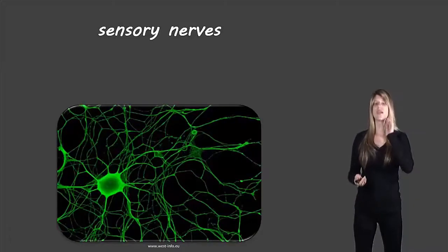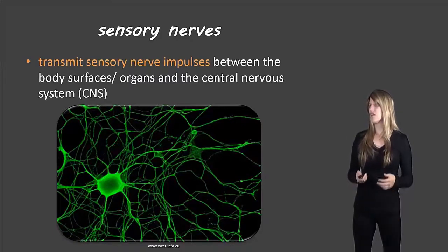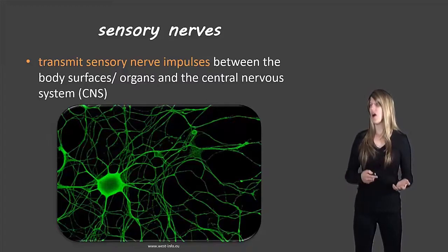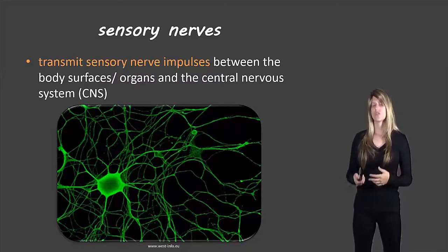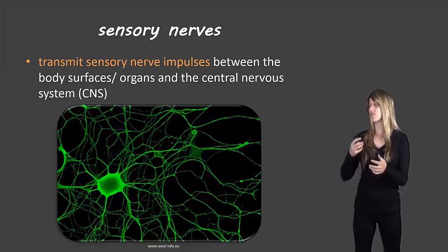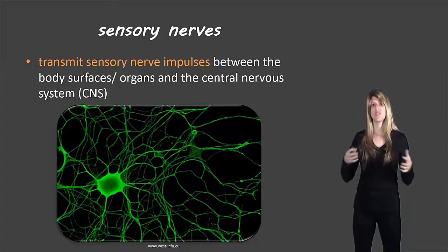Let's take a look at the types of nerves. The first is the sensory nerve — these transmit sensory nerve impulses between body surfaces or organs and the central nervous system. The central nervous system and the different organs, or surfaces like the skin of the body, have to have a connection.